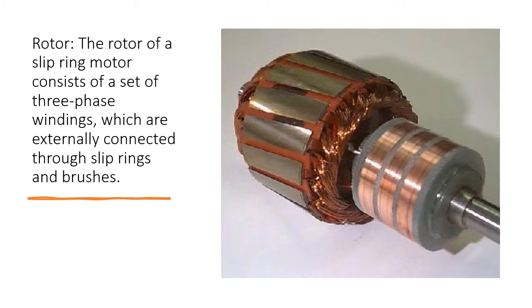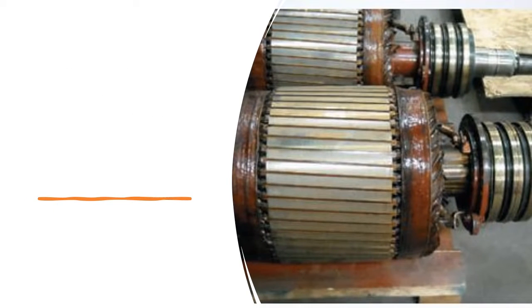Rotor - The rotor of a slip ring motor consists of a set of three-phase windings, which are externally connected through slip rings and brushes.